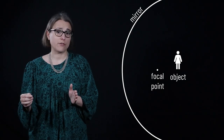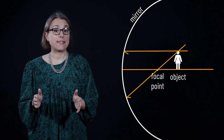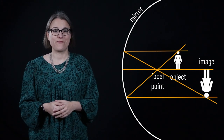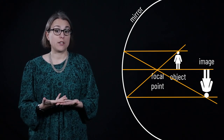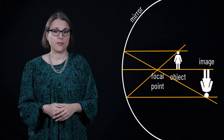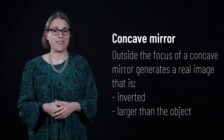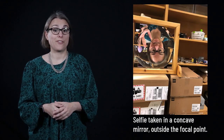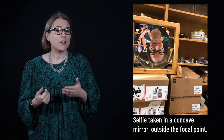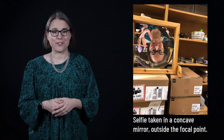As an object moves past the focal point, the image changes. We can trace each ray of light and see that they converge on the same side of the mirror as the object, creating a real image. A real image means the image is created on the same side as the object due to light rays converging rather than diverging. This real image is upside down and larger than the object. You may have seen this in a funhouse mirror, and if you step far enough from a makeup mirror, you'll pass the focal point and go from upright and magnified to upside down and magnified.